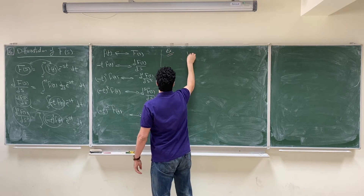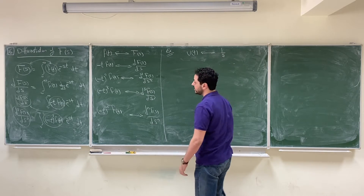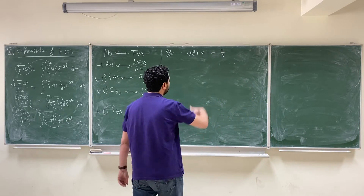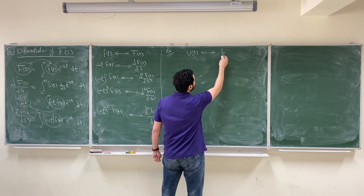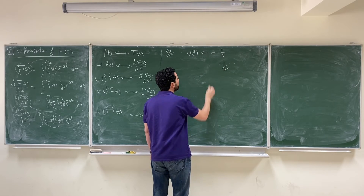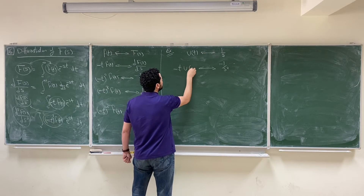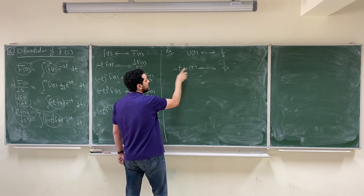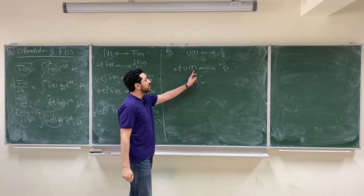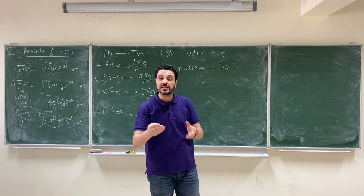Let's solve a couple of examples to verify this property. The first example: we know the unit step has a Laplace transform of 1/s. If we differentiate in the s-domain, we get -1/s². This is equivalent to multiplying by -t in the time domain, giving -t·u(t). Canceling the two negatives gives us the ramp function, which has a Laplace transform of 1/s².